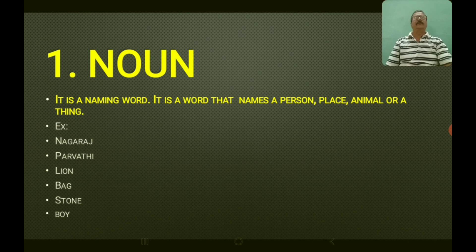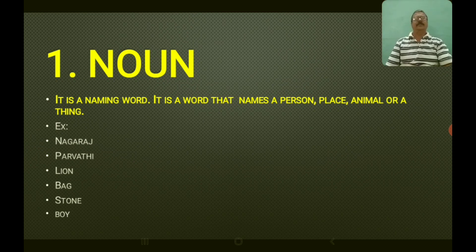Let us learn them one by one. What is a noun? It is a naming word — a word that names a person, place, animal, or thing. Examples: Nadaraj, Paroti, lion, bag, stone, boy.